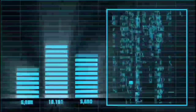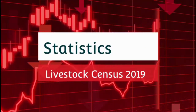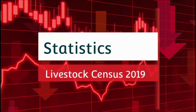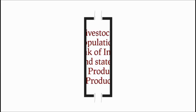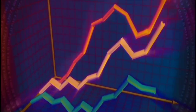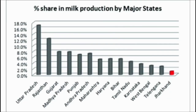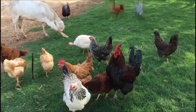The first important topic is statistics. In statistics, the Livestock Census of 2019 has all the data that you have to remember. You should remember how much India's total livestock population is, egg production, milk production, and India's rank in milk production. You should also know the state-wise rank of livestock population, milk production, and egg production. For example, Uttar Pradesh holds the first rank in livestock population.